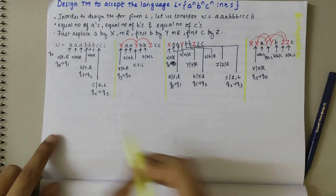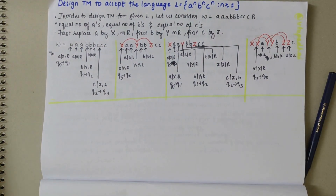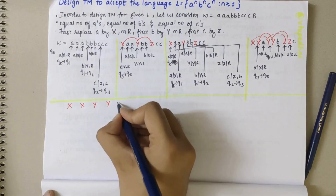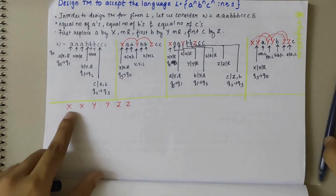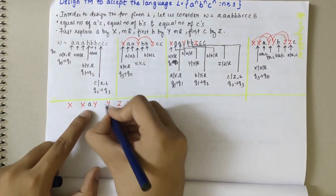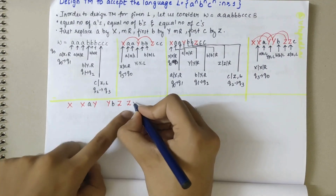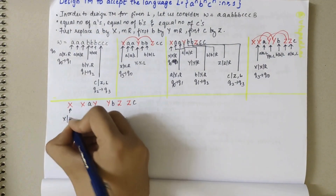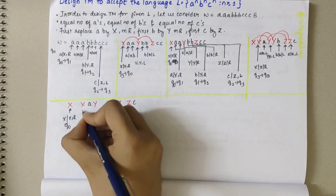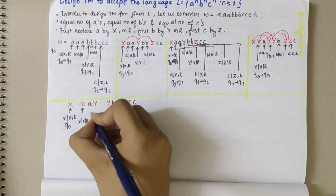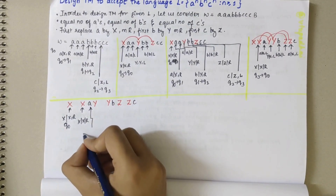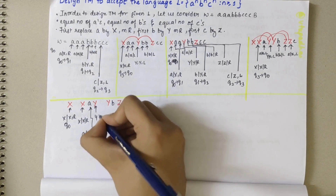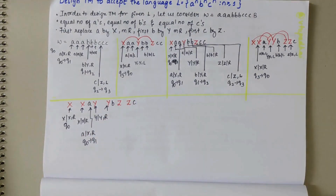Now we look into the third X, Y, Z. The tape has XXX, YYY, ZZZ with remaining single A, B, C. Starting from Q0, replace X by X and move right twice. When we reach the last A, replace A by X and move right — Q0 to Q1. Skip Y by Y and move right twice. Coming to the last B, replace B by Y and move right — Q1 to Q2. Coming to the last C, replace C by Z and move left — Q2 to Q3.